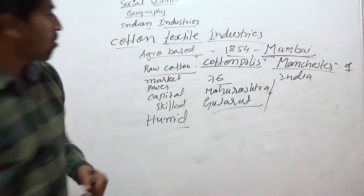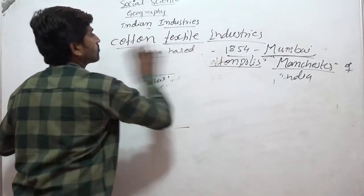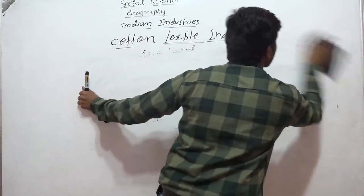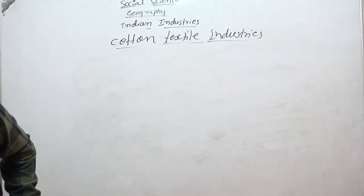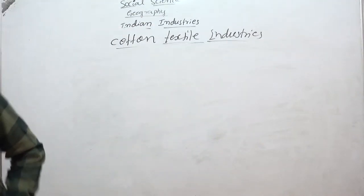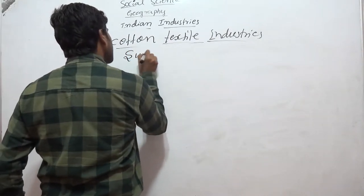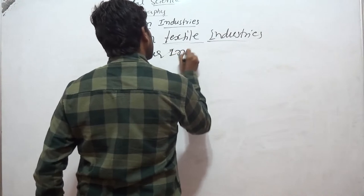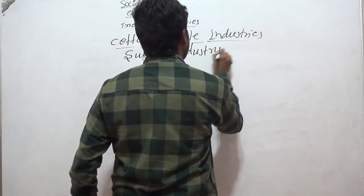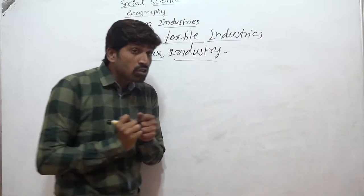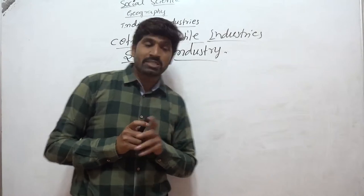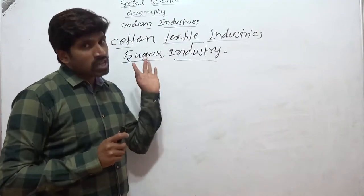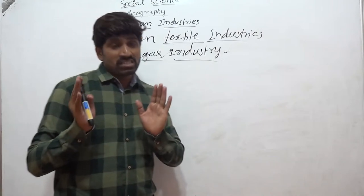After cotton textile, another important agro-based industry is sugar industry. Sugar industry is also called agro-based industry because the raw material — sugarcane — comes from agriculture. The main raw material for sugar industries is sugarcane.